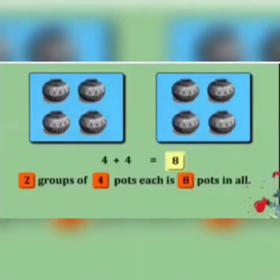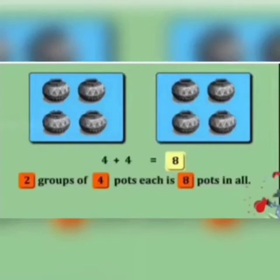Now let us understand this example. In this picture we have 2 groups, and each group has 4 pots in it. So if we want to calculate the total number of pots, we will add the number of pots in each group. So 4 plus 4 is equal to 8. In total we have 8 pots.